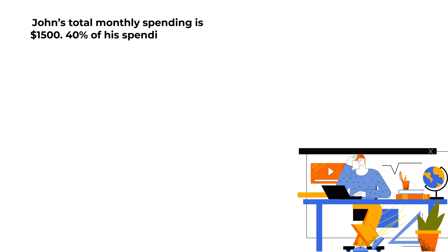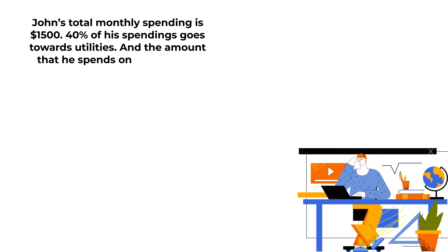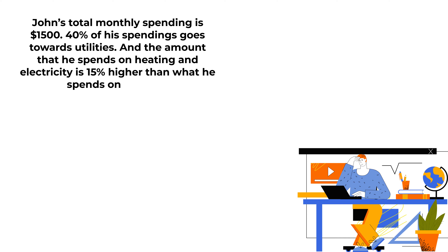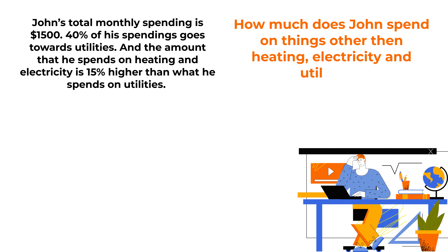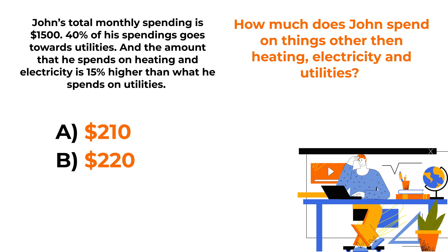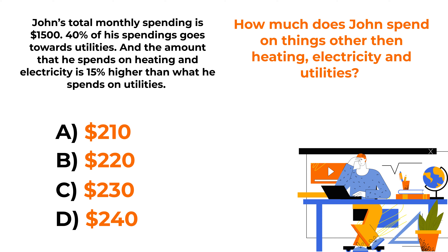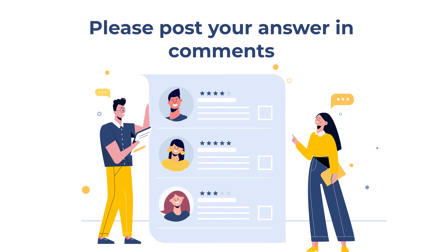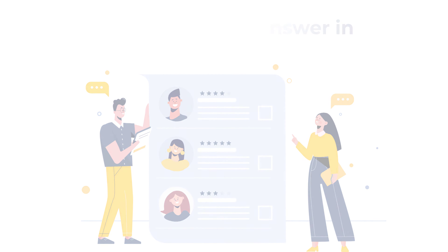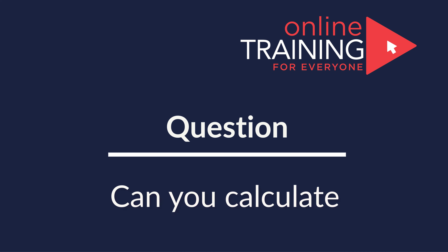Here's an interesting question: John's monthly spending is $1,500. 40% goes toward utilities, and the amount he spends on heating and electricity is 15% more than what he spends on utilities. How much does John spend on things besides heating, electricity, and utilities? Choices: A) $210, B) $220, C) $230, D) $240. The correct answer is choice A, $210. If you figured it out, please post your answer in the comments.